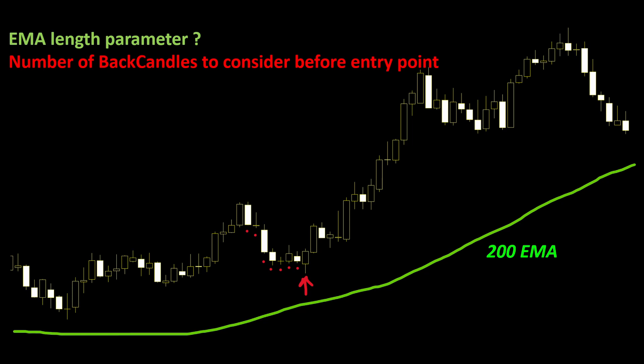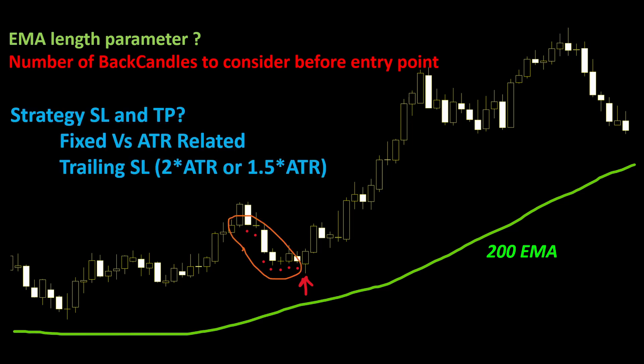That was the easy part — what I call the indicator part. Any strategy must be combined with a trade management approach. We need to define our stop loss and take profit values, which can be related to the average true range of the market or can be fixed values for all trades. This is the hard part, because even with a perfect indicator, if you don't combine it with correct trade management, your strategy will not give a positive return. We can also use a trailing stop loss related to the ATR.